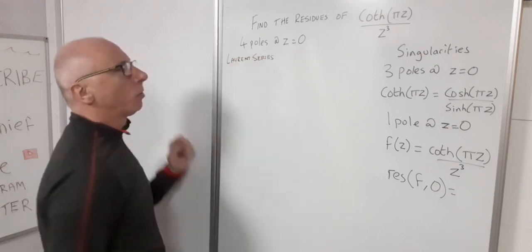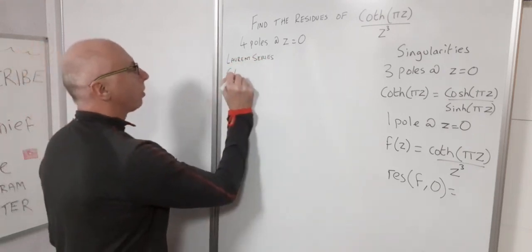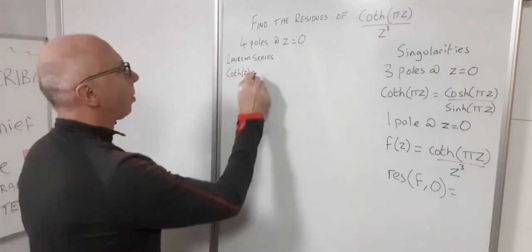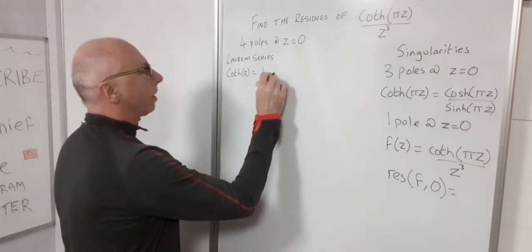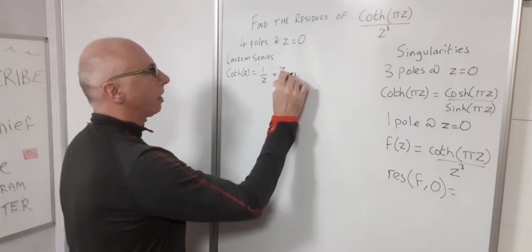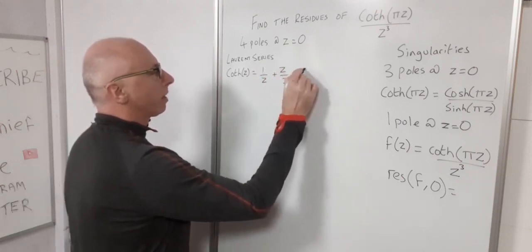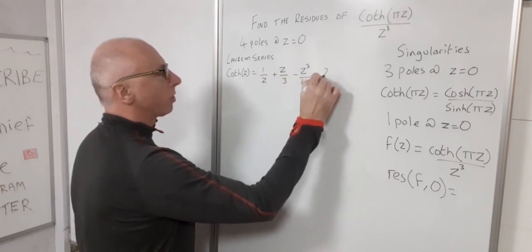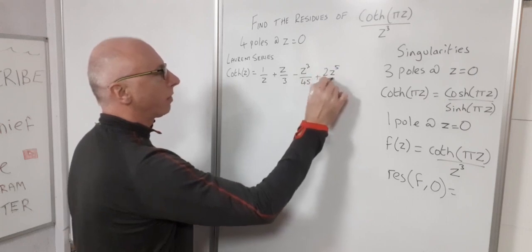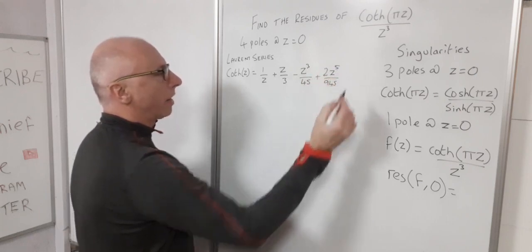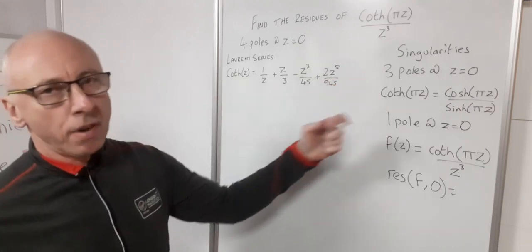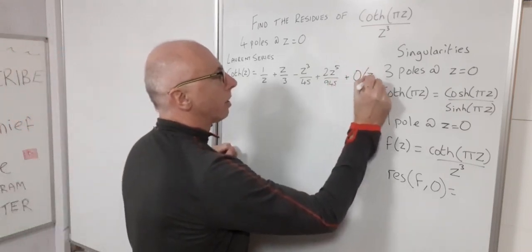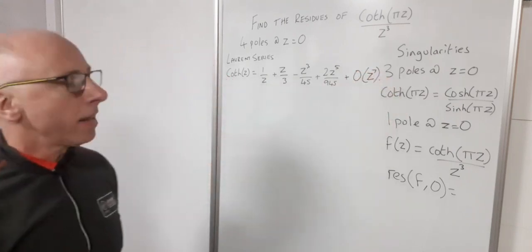Okay well the hyperbolic cotangent function we know one for that. So that is just 1 over z plus z over 3 minus z cubed over 45 plus 2 z to the 5 over 945 and then there are more terms going on forever and ever. So I'll just stop at the seventh term using o z to the 7 to end it there.